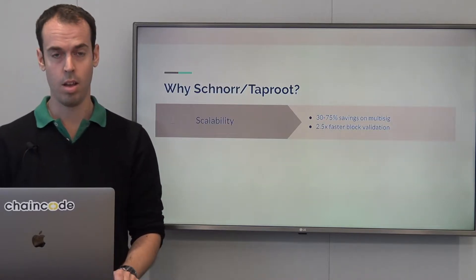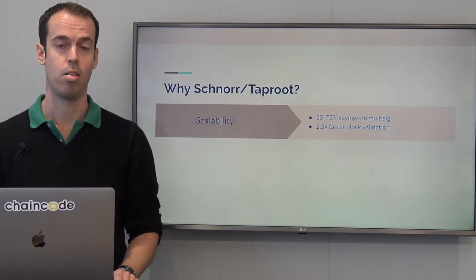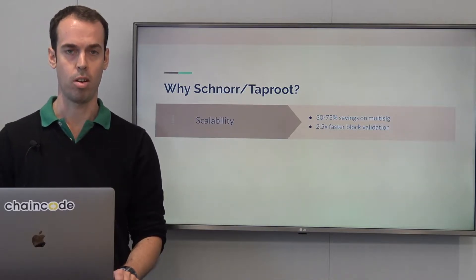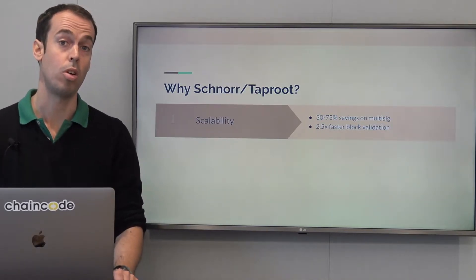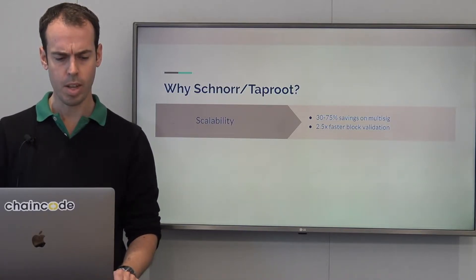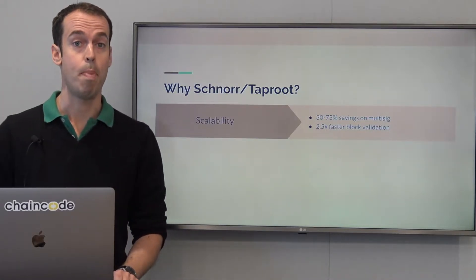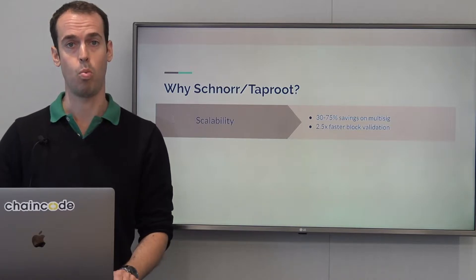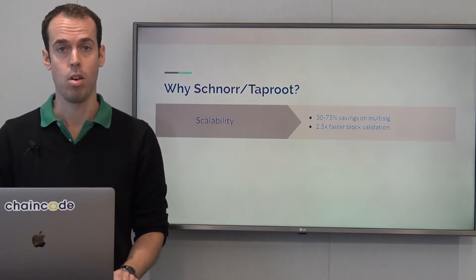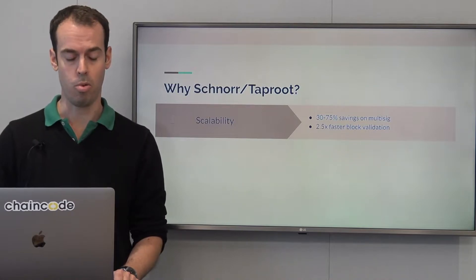The first is scalability. It achieves that by allowing multiple signers in a transaction to create an aggregate public key and an aggregate signature, so multi-sig ends up looking like and costing the same to validate as a single signature. As well as that, Schnorr signatures allow batch validation, which means that when downloading the entire blockchain and validating all transactions, those signature validations can be done in parallel more efficiently than if they were being done separately.